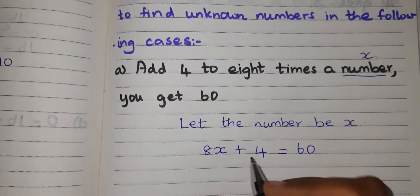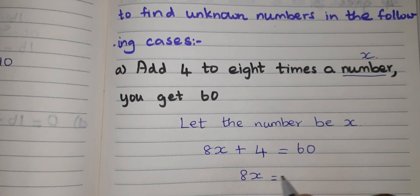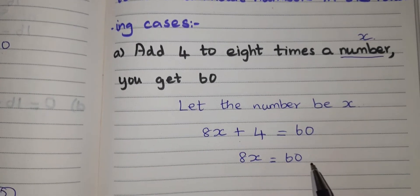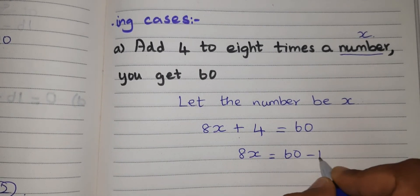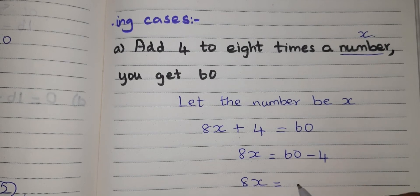Now I have to find out X. So keep 8X equal to 60. When plus goes to this side, transposing method it will go as minus. So 8X equal to 60 minus 4, 56.